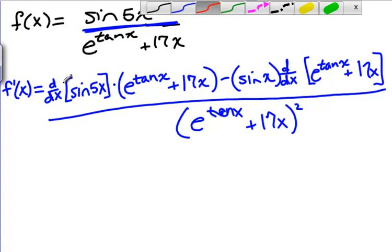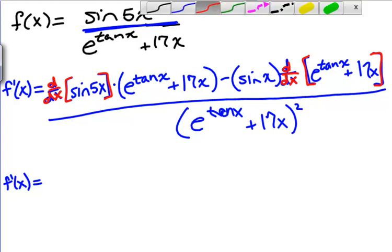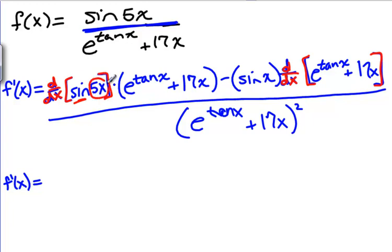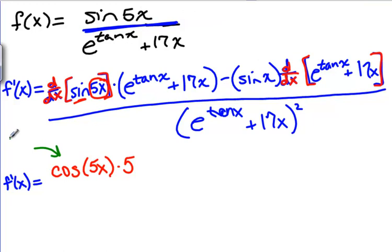We have two derivatives that we still need to take. Once we figure out these two derivatives and plug them in, we'll be done. First, we need the derivative of sine of 5x — here we need a chain rule. The outside function is sine, the inside function is 5x. The derivative of sine is cosine, keep the inside unchanged, then multiply by the derivative of the inside. The inside is 5x, so its derivative is 5. That's the chain rule inside a quotient rule.